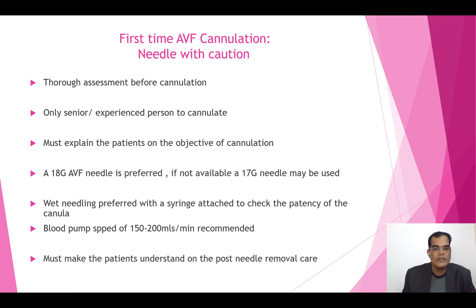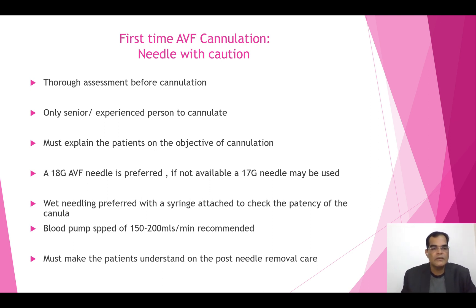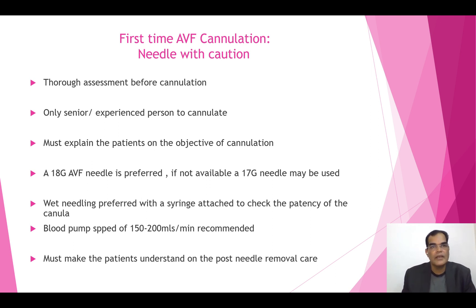Compared to other access like catheters, the patient will experience a little pain during needling, so this must be clearly explained. An 18-gauge needle is ideal for first-time cannulation; if not available, 17-gauge can be used. Wet needling is always recommended — flush the needle with saline and attach a syringe to check vessel patency. Dry needling without saline flush is not preferred.